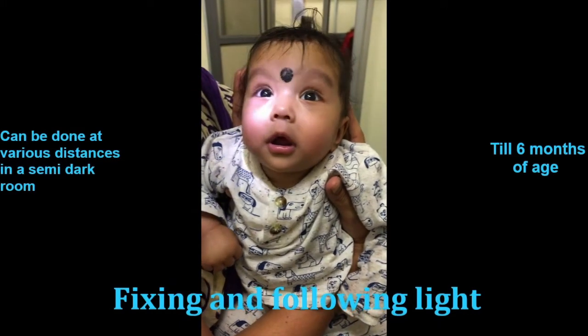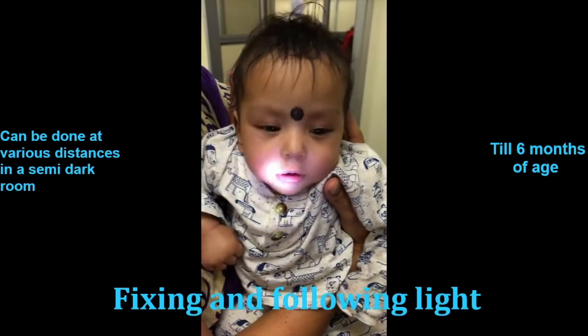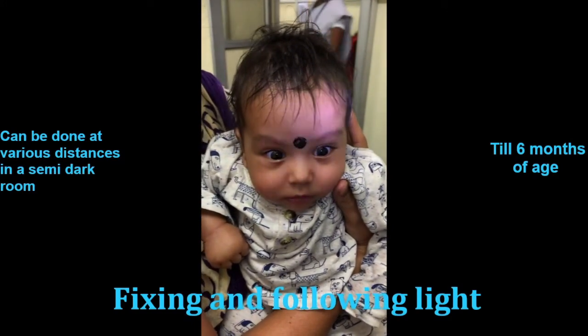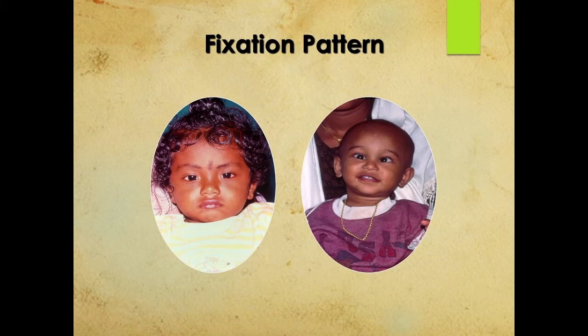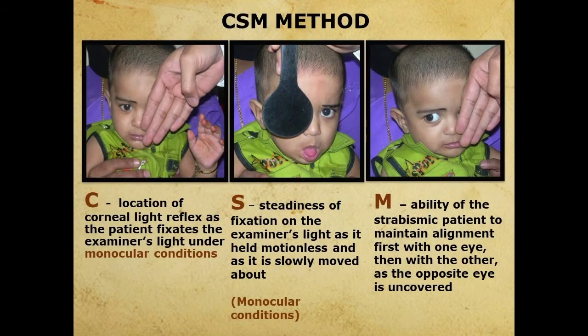The next is the fixation pattern. In the child on the left you can see the corneal reflex well centered, whereas in the child on the right the left eye appears slightly deviated and esotropic. Just by throwing a light and making sure the eyes are orthophoric with fixation centered, you can judge visual acuity. The CSM method — Central, Steady, Maintained — is a simple method to check visual status, usually done with one eye fixing an accommodative target held at 40 centimeters.